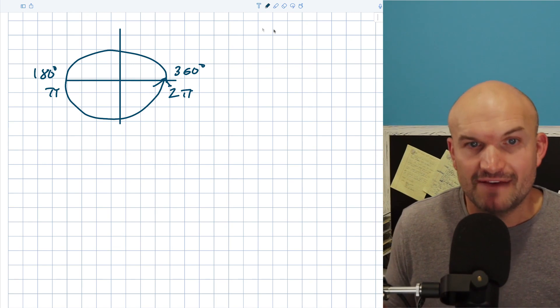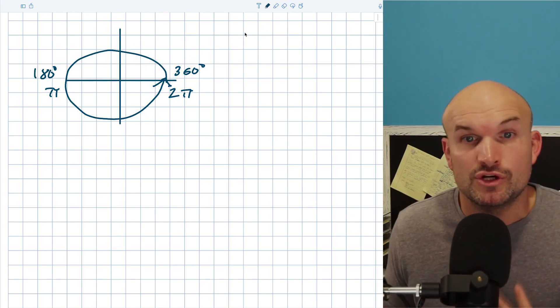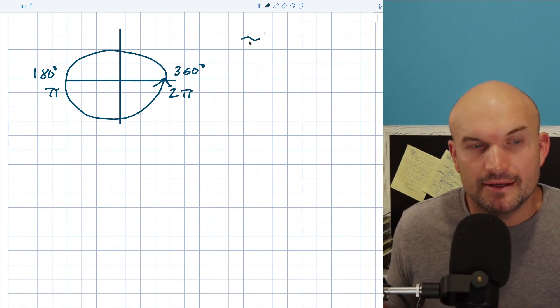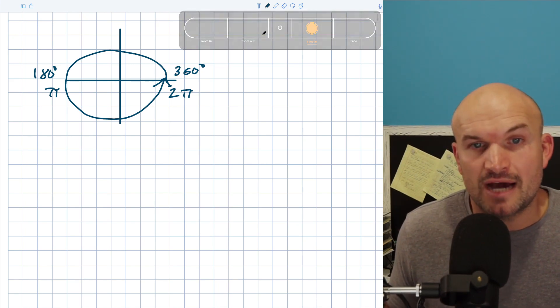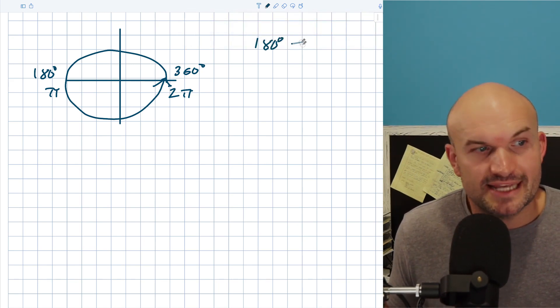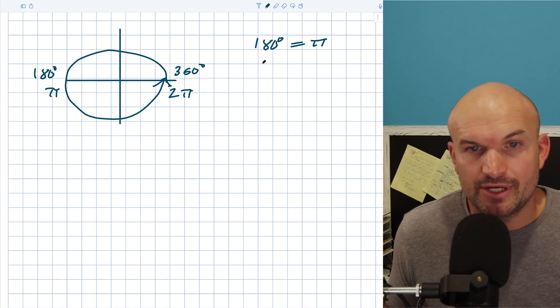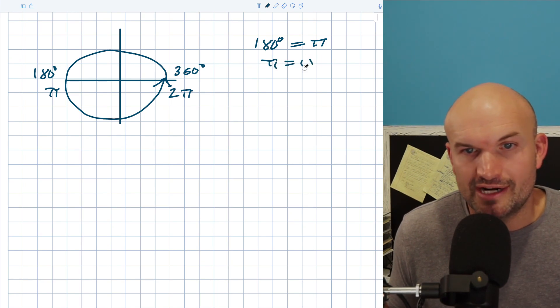So there's a couple of equivalent ratios here that we have. We know that measurements are equal to each other. We can say 180 degrees is equal to π. And we know that π is equal to 180 degrees.